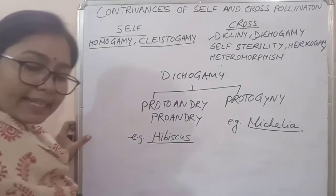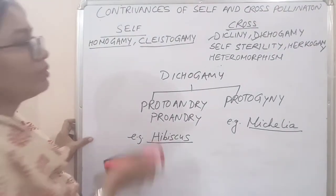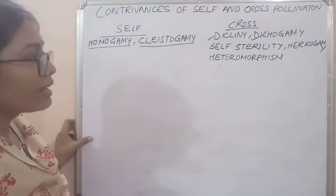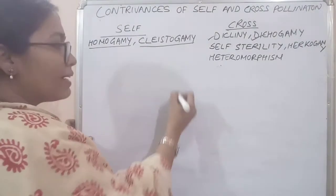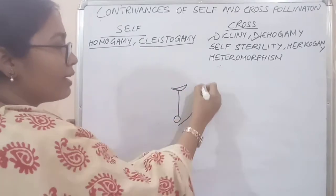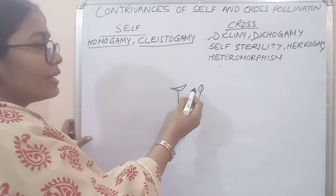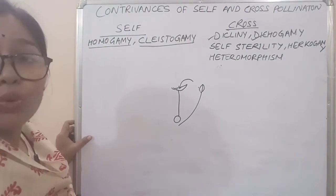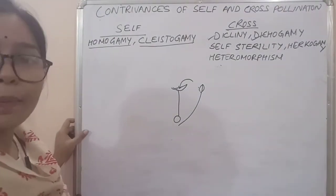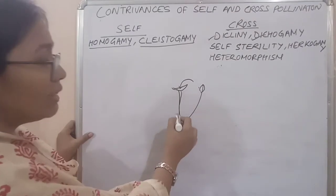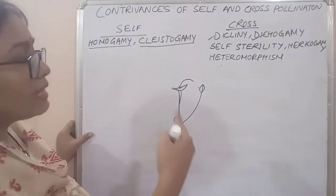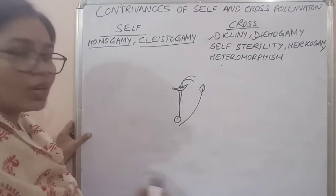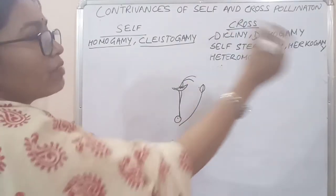So proto-gyny and proto-andry are both forms of dicogamy. Next is self-sterility. Self-sterility means the plant has both gynoecium and androecium, but when pollen is transferred to the stigma of the same plant, it cannot develop a pollen tube to grow downward. However, pollen from a related plant can grow and develop a pollen tube. So this is self-sterility, with the example being Solanum tuberosum — potato.